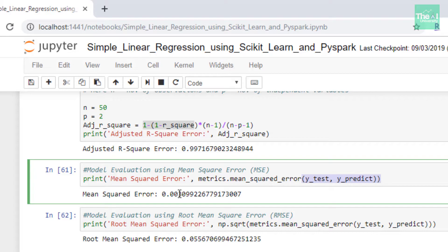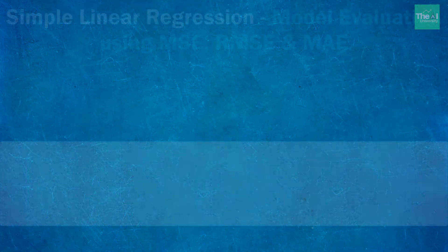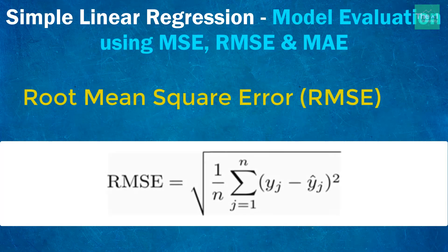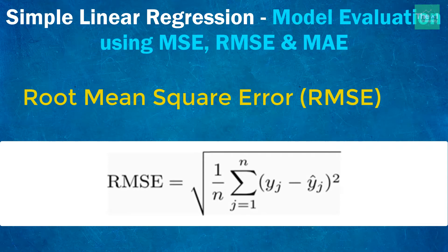So let's move on to another metric called root mean square error, which is nothing but the square root of mean square error. It is represented by the formula shown on the screen, and it basically tells you how concentrated the data is around the line of best fit.